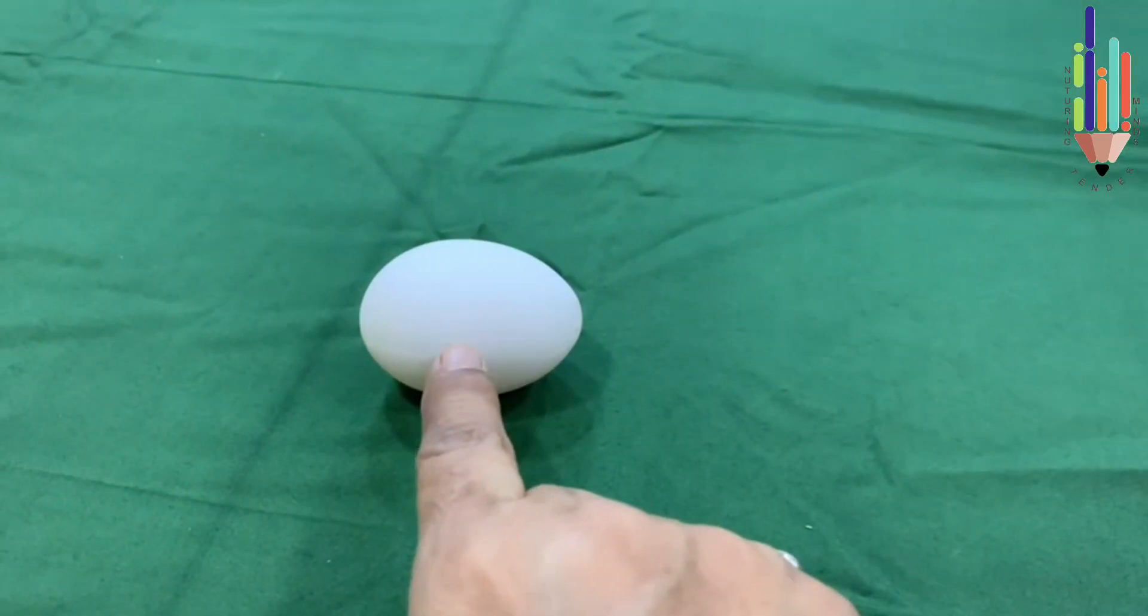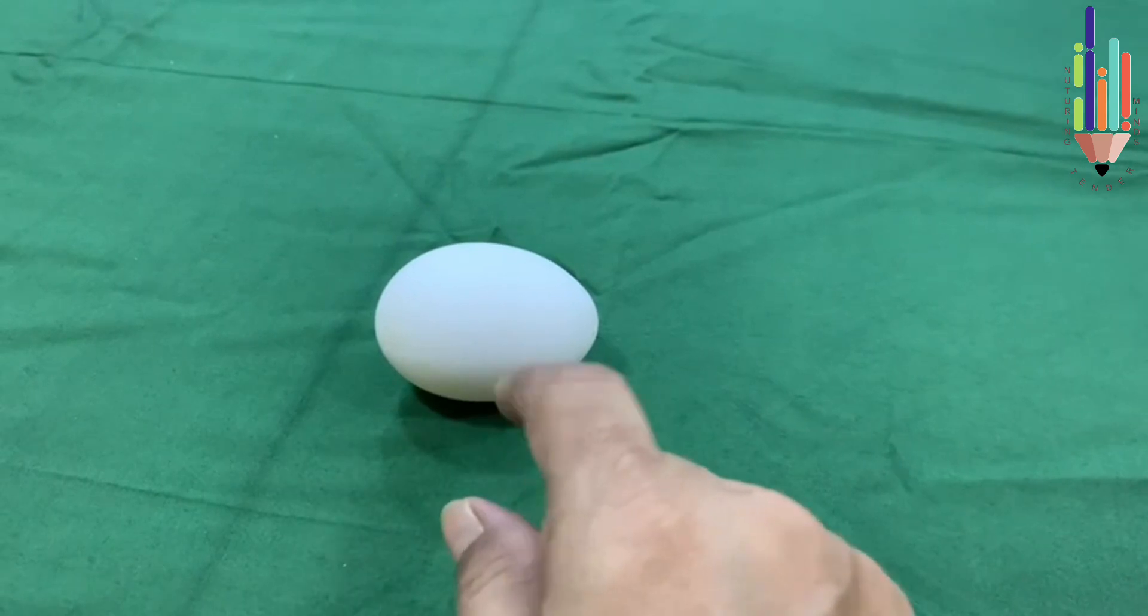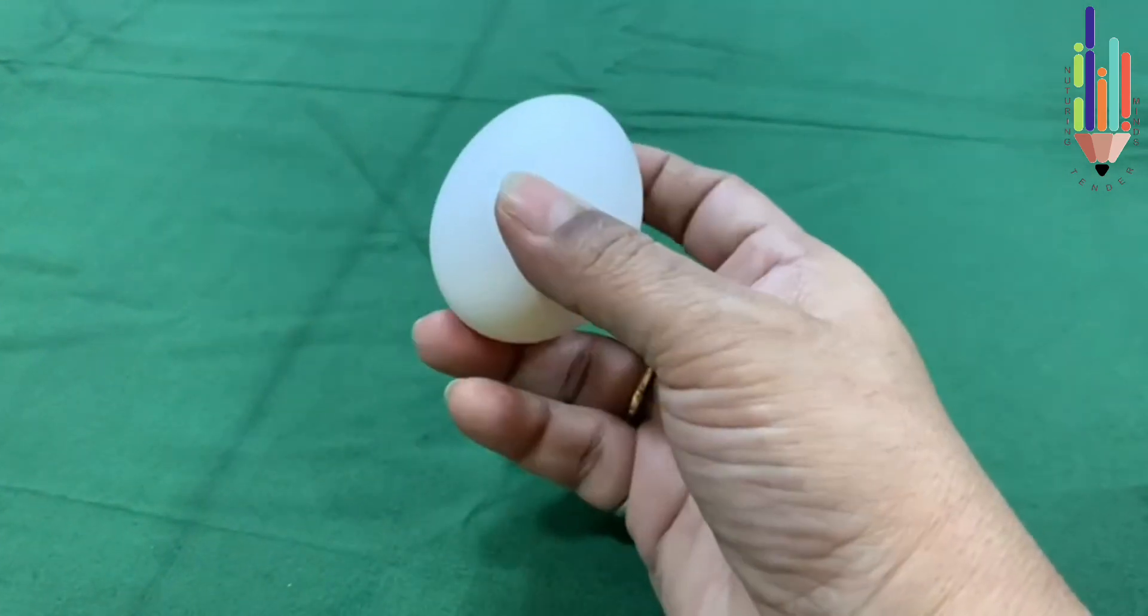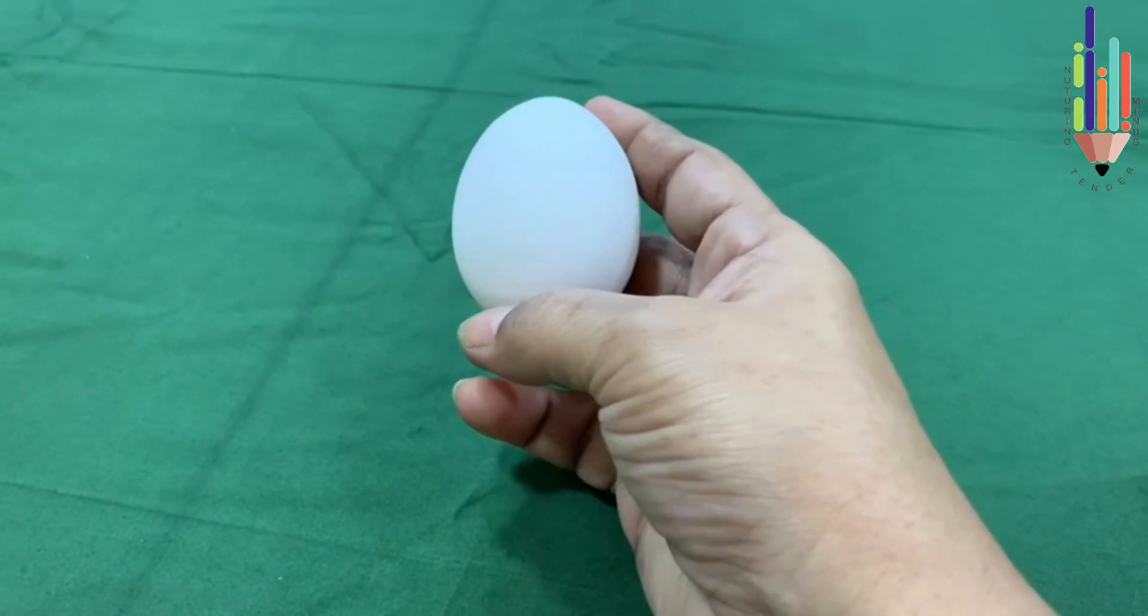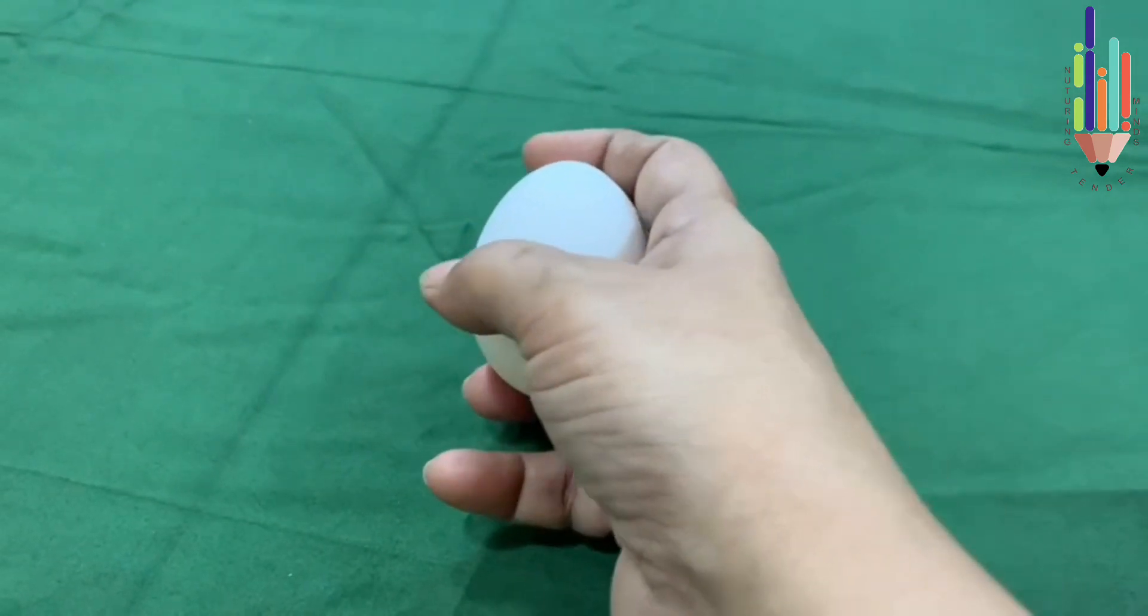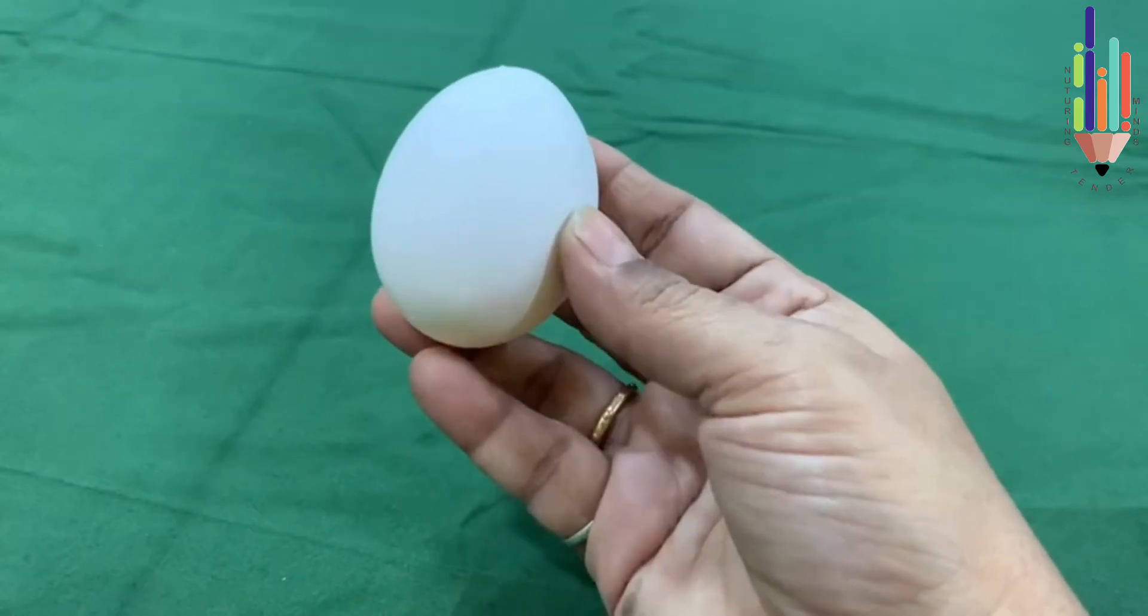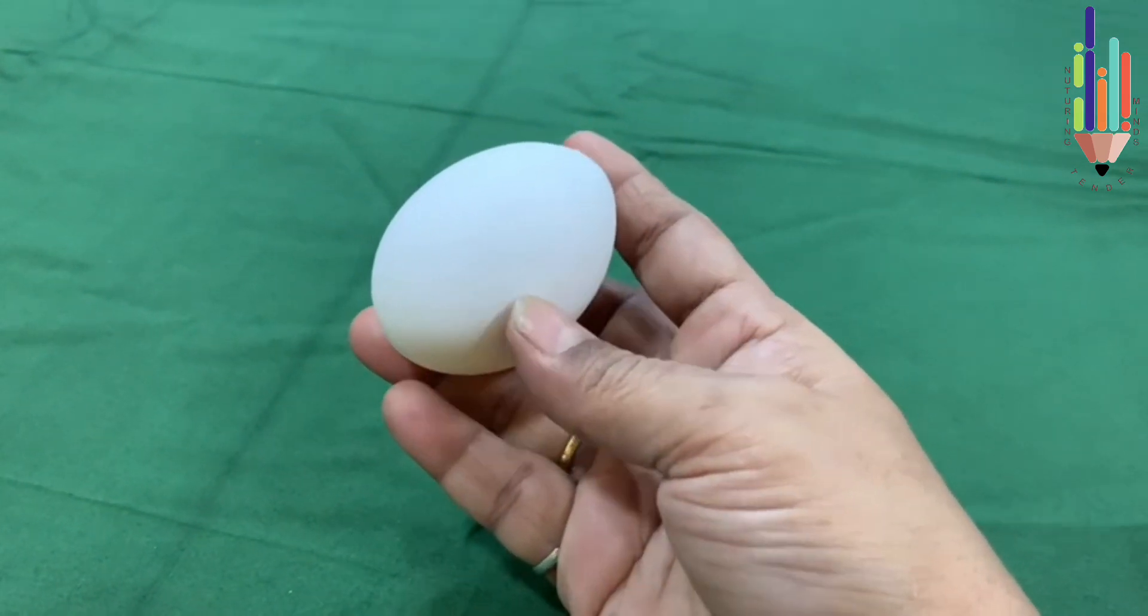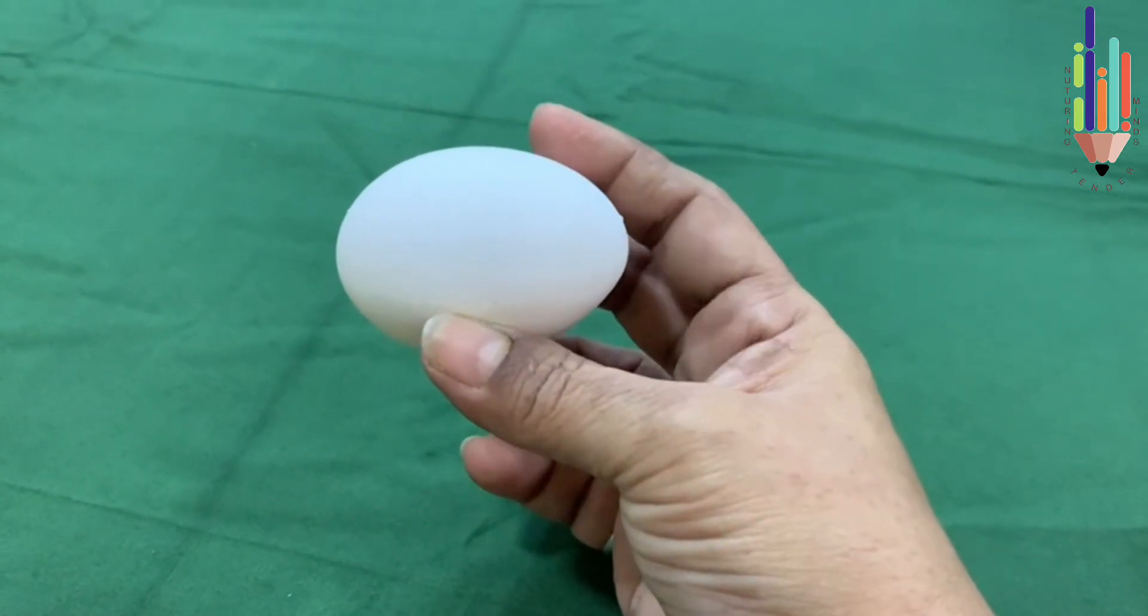Now this is an oval shape. This is an egg which is oval shape. Can you see it is broader from the base, and when it goes up it becomes narrower? So this is the shape of an egg which is oval. I hope you like this video.